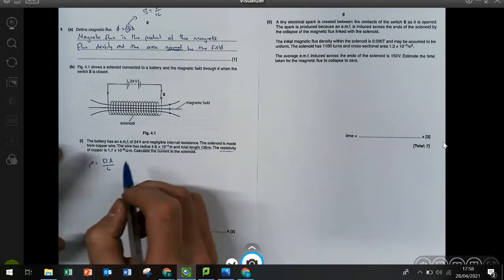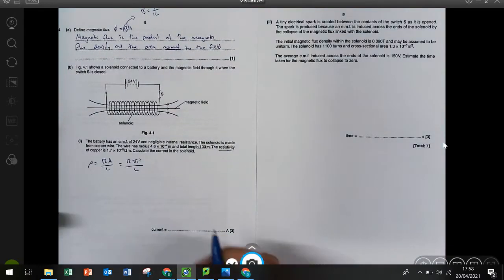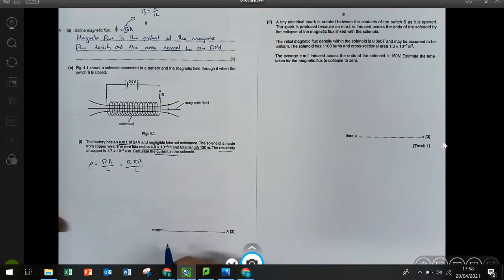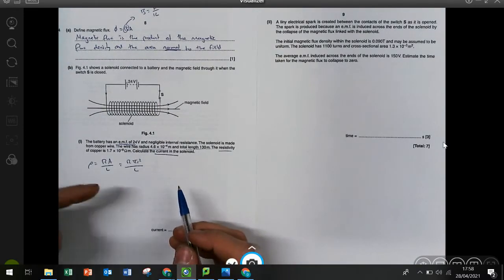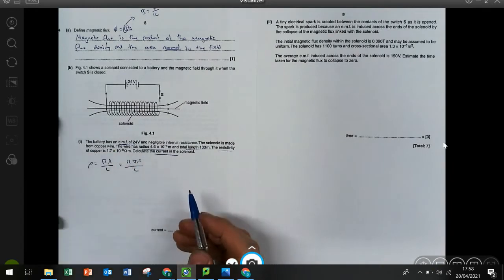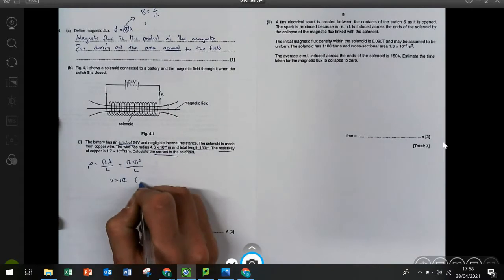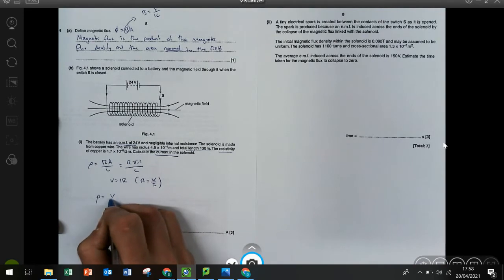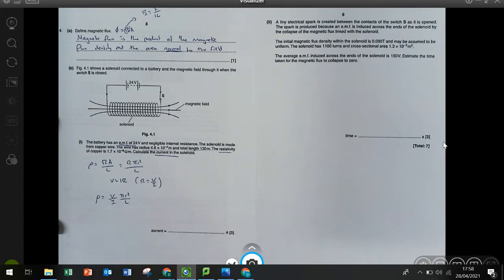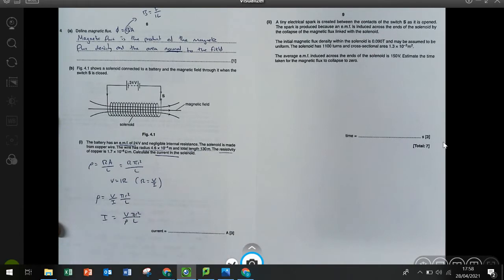And I was thinking, well, I've been given a radius so I can replace area with pi r squared. Now, I've also been asked for the current and I've been told what the EMF is. So I'm thinking, what is the relationship between EMF, current and something else, which is going to be resistance? And obviously, we know that V equals IR or R equals V over I. So I can substitute that in, say resistivity is V over I pi r squared over length. And then finally rearrange and say that current is V over resistivity pi r squared over length.